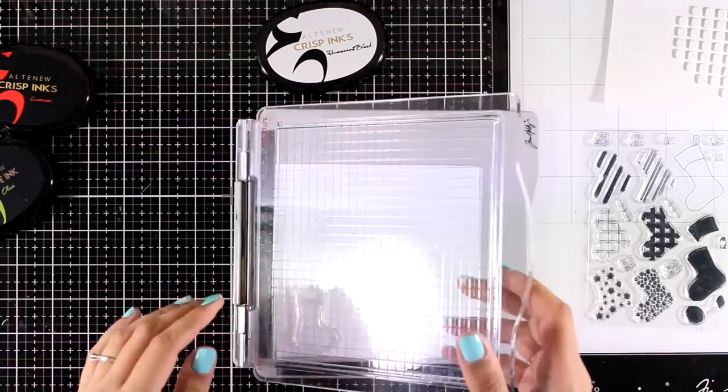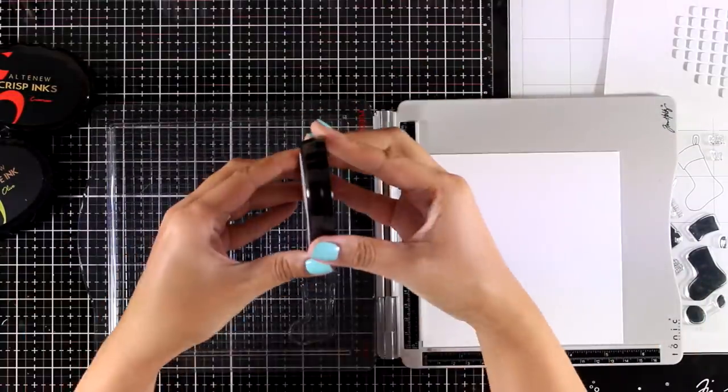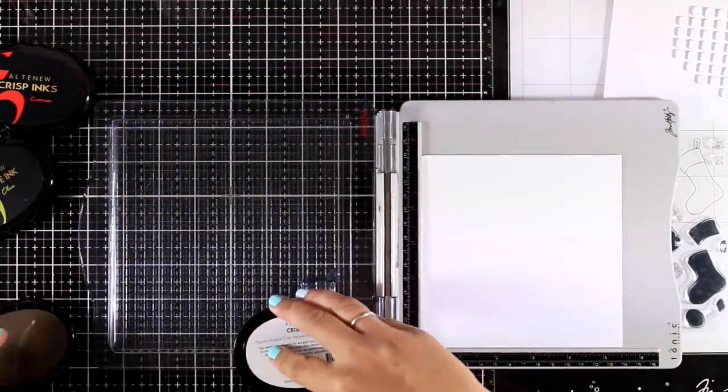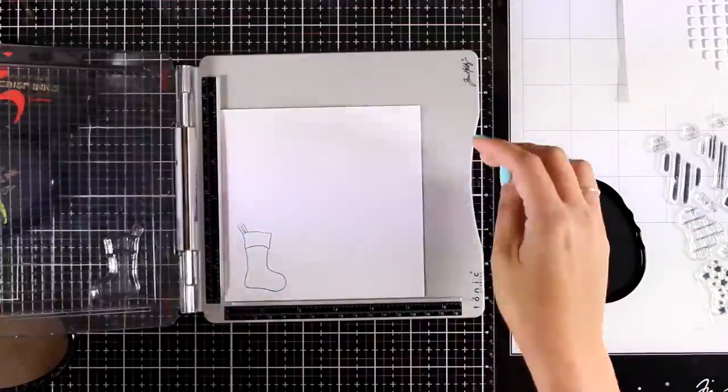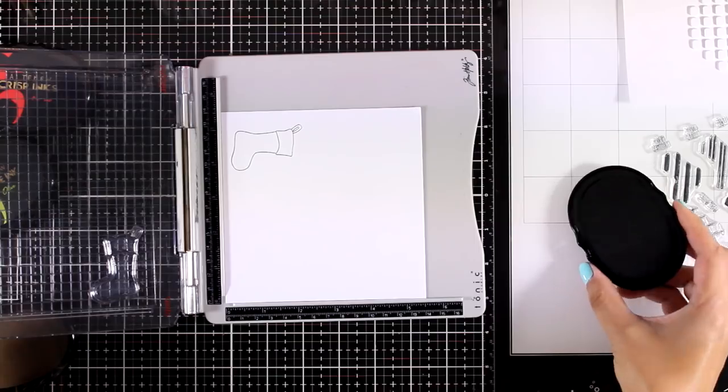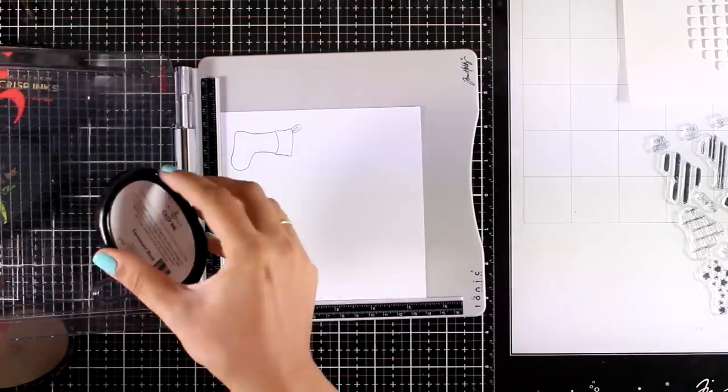So to start, first I'm going to stamp the outline three times. I decided to have three stockings on my card so I'm using my permanent ink and I am going to stamp the outline rotating the paper every time.